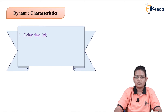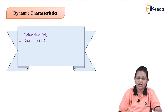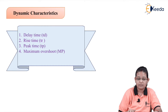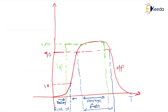So let us see one by one. First we have to see the delay time, then rise time, then peak time, maximum overshoot, and settling time. All these terms relate to the output when it changes with respect to the input. In the diagram, the green lines represent the inputs and the red lines represent the outputs.